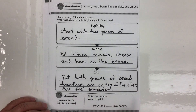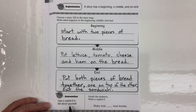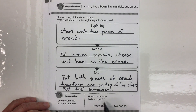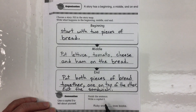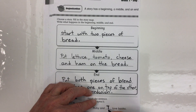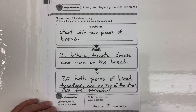At the bottom of our work page it says 'convention': use a capital I to tell about yourself. The word I, when describing yourself, is always written as a capital — whether it's at the beginning, middle, or end of the sentence. So here we have it coming in the middle: 'Ruby and I' — we make that a capital I. Ruby and I love books. Capital I for the convention.